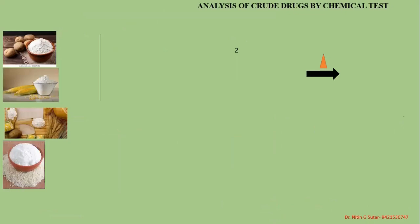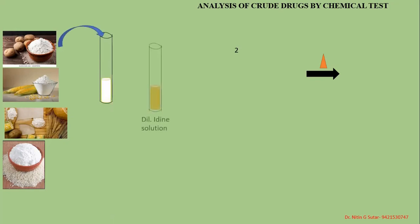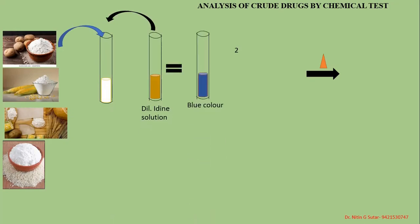The next drug is starch. Starch is obtained from potato, maize, beet, and rice — these are the four major sources. For the first test, prepare the aqueous solution of starch and add dilute iodine solution — you get a bluish color. The color depends on the concentration of amylose to amylopectin; the color varies from blue to purple depending on that concentration ratio.